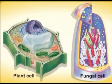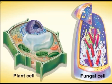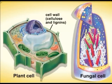Cell walls are also present in eukaryotes such as plants, algae, and fungi, but are lacking in animal cells and protozoa. Plant cell walls contain cellulose and lignans, whereas fungal cell walls contain chitin.